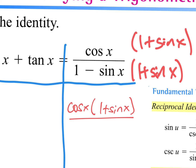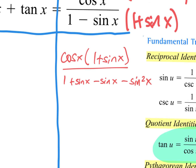Now when I multiply the bottom: one times one is one; one times the sine of x is plus sine x; negative sine of x times one is minus the sine of x; and then negative sine x times positive sine x is minus sine squared x. We've done this like a hundred times — the sine x's in the middle cancel. So I'm left with one minus sine squared x.